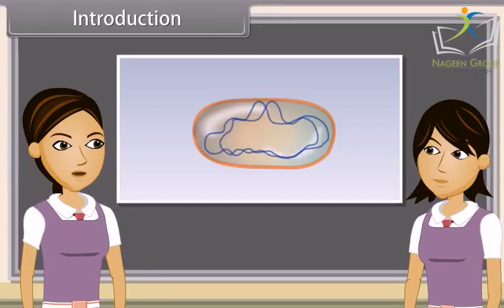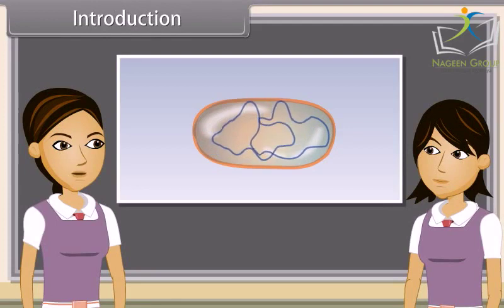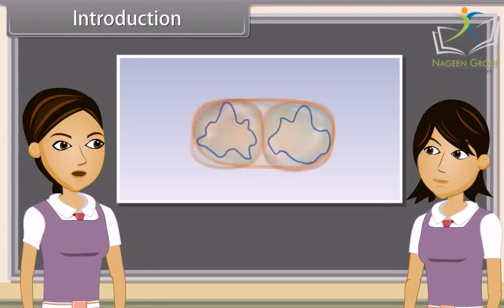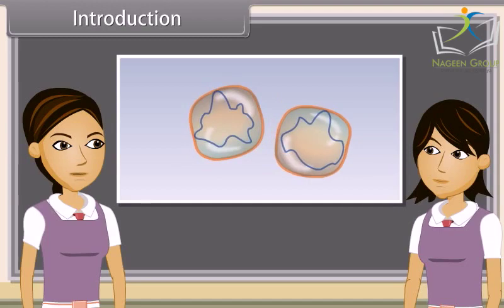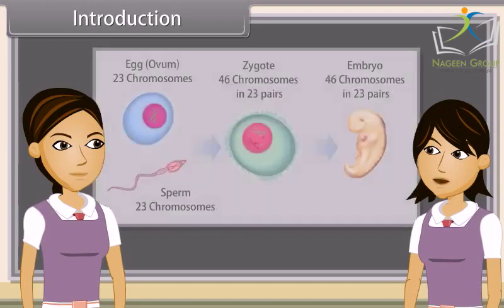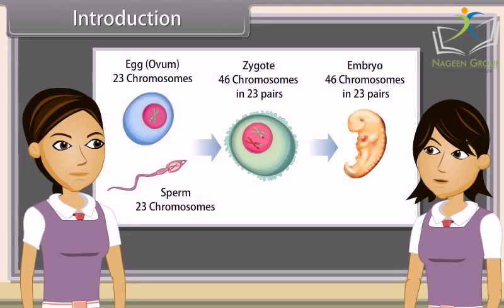Reproduction is the ability of all organisms to produce young ones similar to themselves in most characters. The process which involves fusion of male and female gametes to form a new individual is known as sexual reproduction.